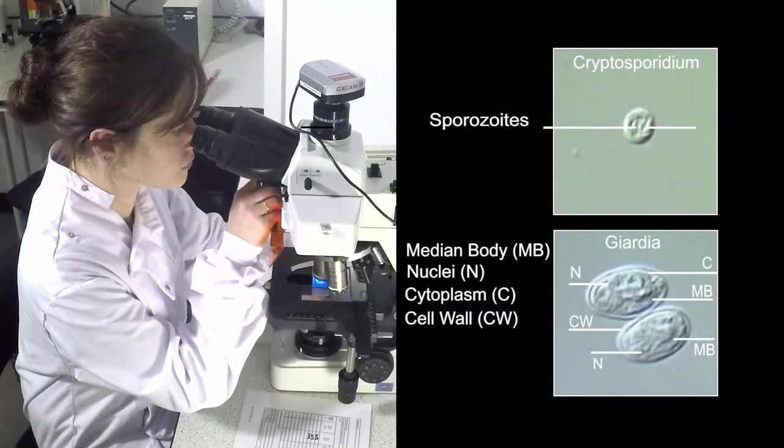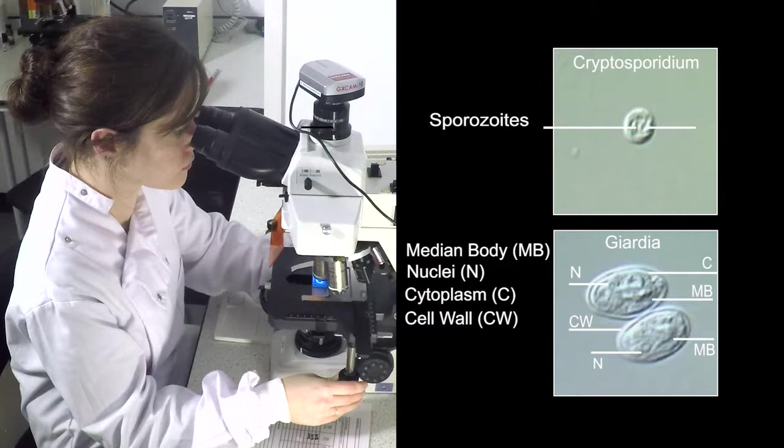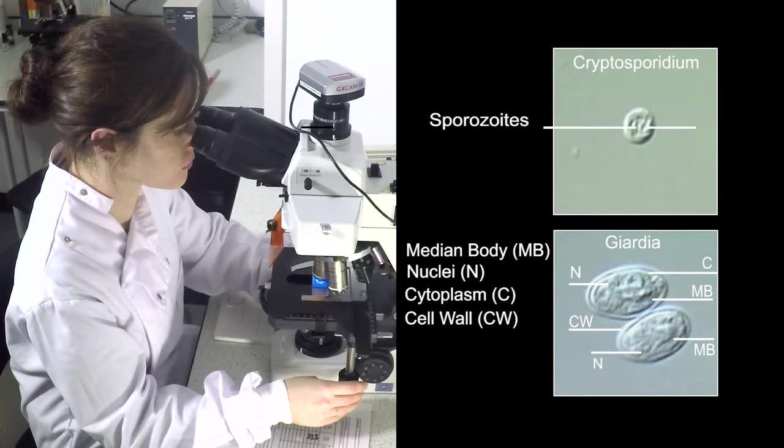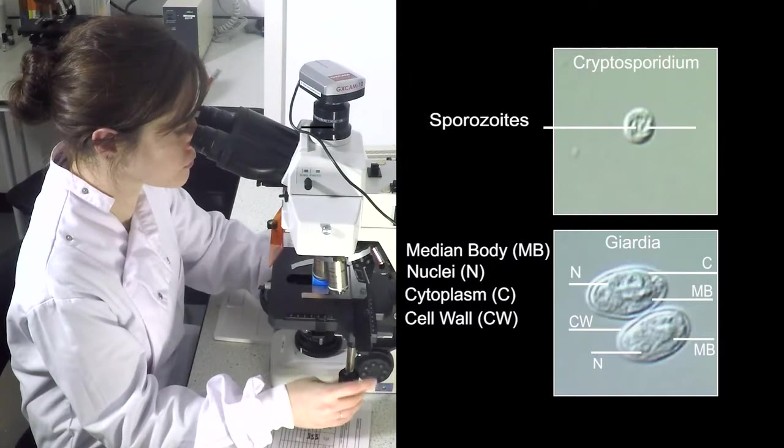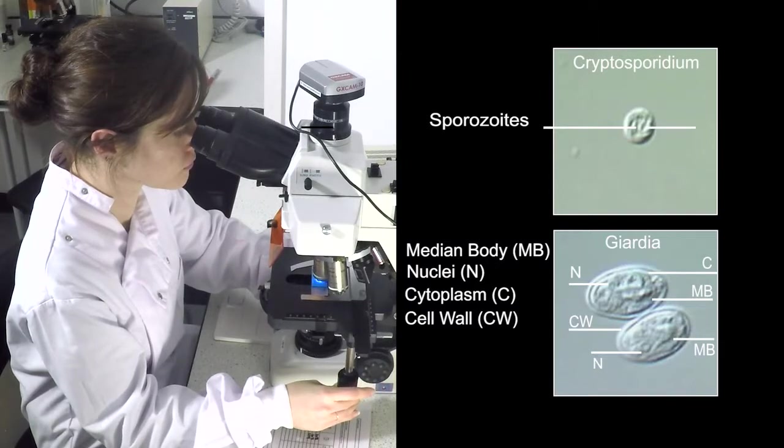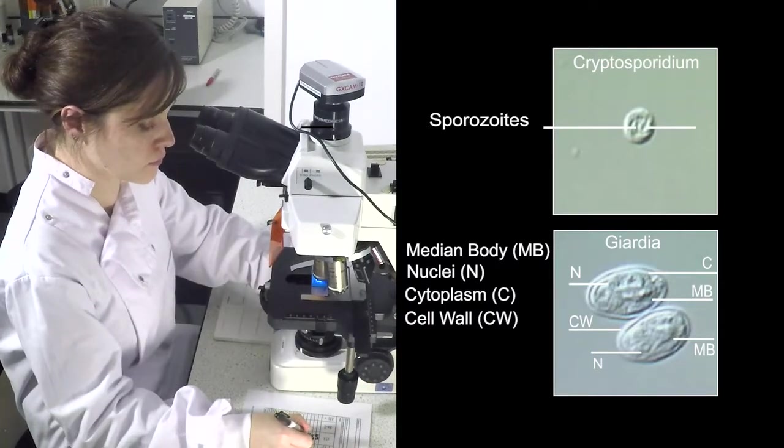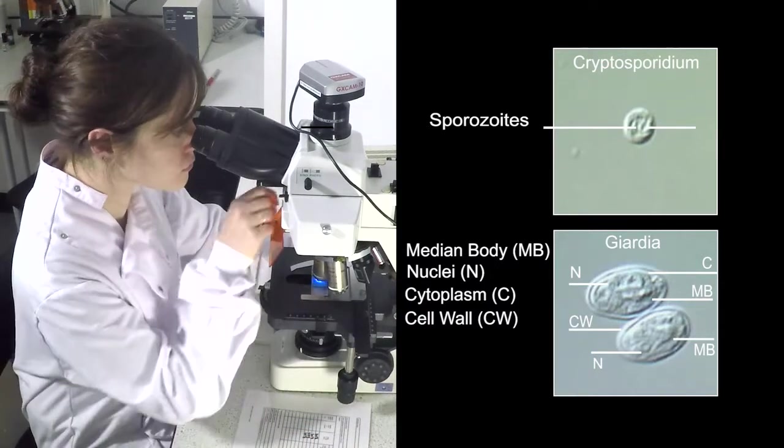Once primary analysis is complete, analysts should proceed to confirmation using DIC microscopy. Analysis for characteristic internal structures performed using DIC microscopy should be performed at least 1000 times magnification.